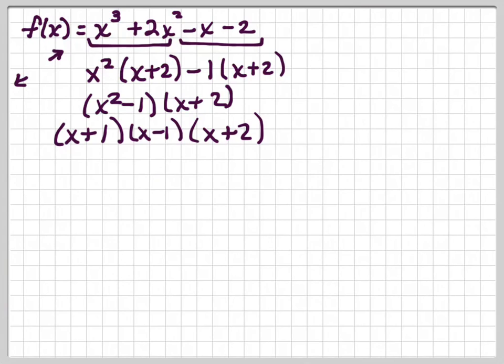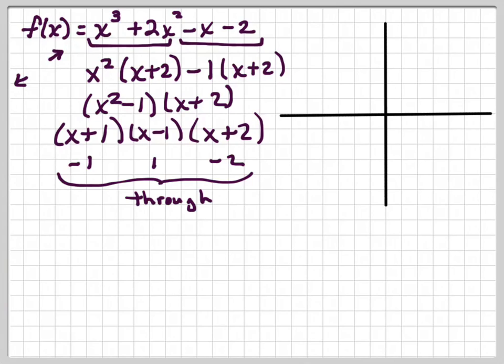So there are our roots, negative 1, 1, and negative 2. And each one of those factors has an exponent of 1. So it's going to go through the graph at negative 1, 1, and negative 2.